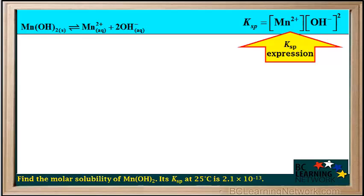Here we'll write the Ksp expression for this reaction. Ksp equals the concentration of Mn²⁺ times the concentration of OH⁻ squared.